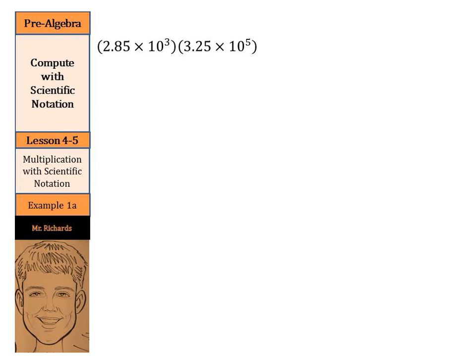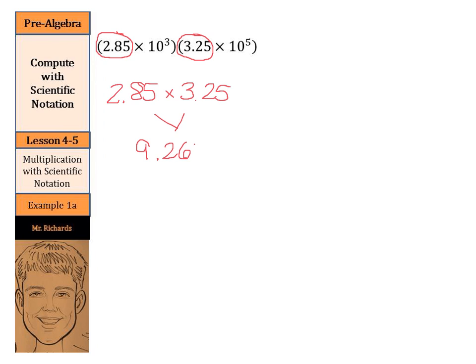Our first example has us multiplying with scientific notation. Our first step when we're multiplying is to regroup this. Let's take our 2.85 and our 3.25 and multiply those separately. 2.85 times 3.25, and when we multiply these two numbers together — you can use a calculator — we have 9.2625.